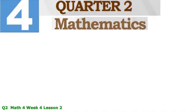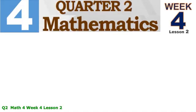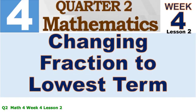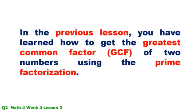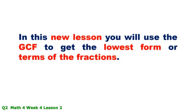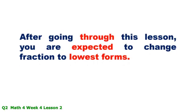How are you kids? We are now in Week 4, Lesson 2: changing fractions to lowest terms. In the previous lesson, you learned how to get the greatest common factor or GCF of two numbers using prime factorization. In this new lesson, you will use the GCF to get the lowest form or terms of fractions.